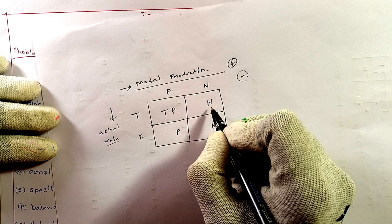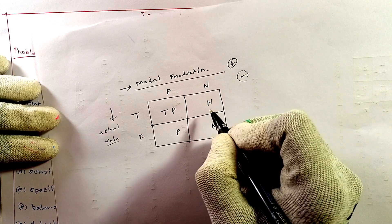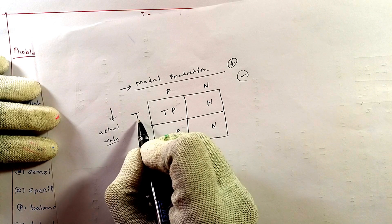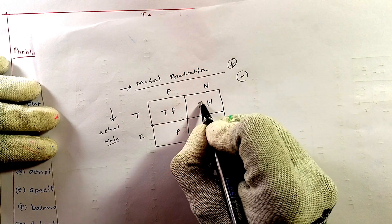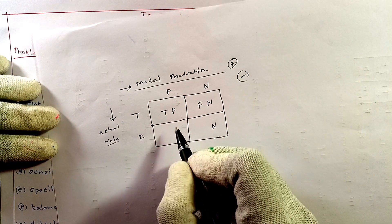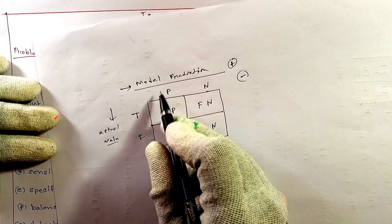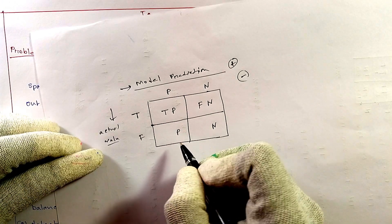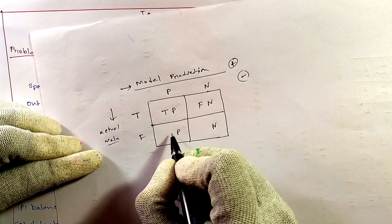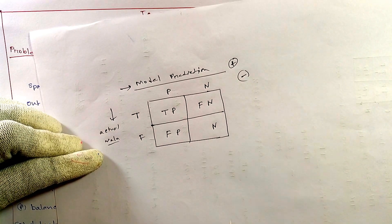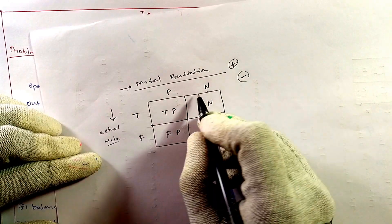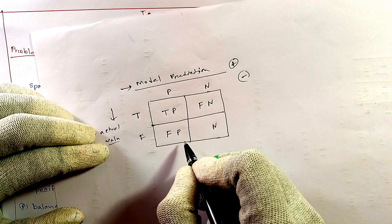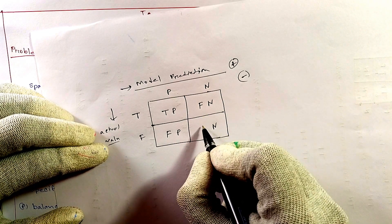In this case, model prediction is COVID negative but actual value is COVID positive, so we have to put here F. In another case, model prediction is positive but actual value is COVID negative, so we put here False. And in the last case, machine predicted COVID negative and actual value is also negative, so we put here T.